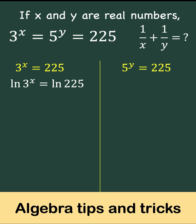We have ln of 3 raised to x equals ln of 225 at the left and ln of 5 raised to y equals ln 225 at the right.